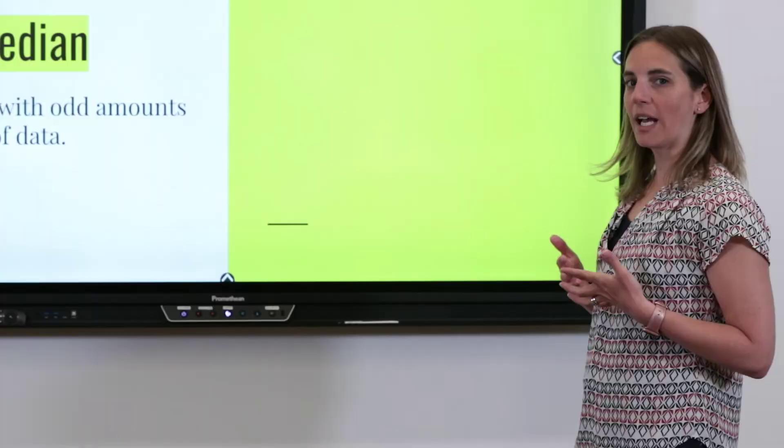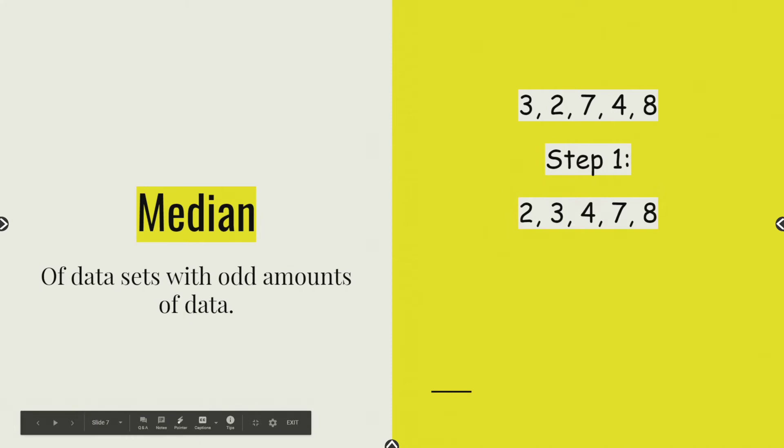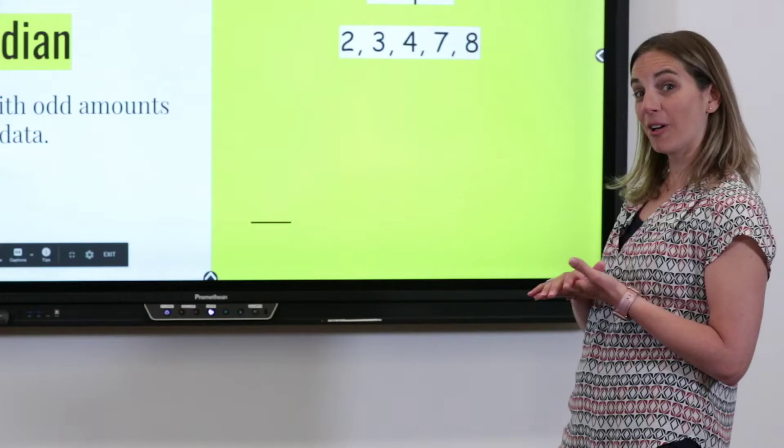Here's your data: a three, two, seven, four, and eight. Take a second and see if you can put them in order from least to greatest. Did you do two, three, four, seven, and eight? If you did, give yourself a nice big pat on the back — fantastic.